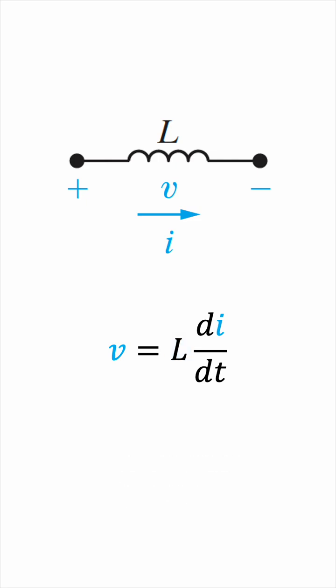Now, if current flows through the coil, it stores energy in a magnetic field around it, and this energy is given by half times the inductance times the current squared.